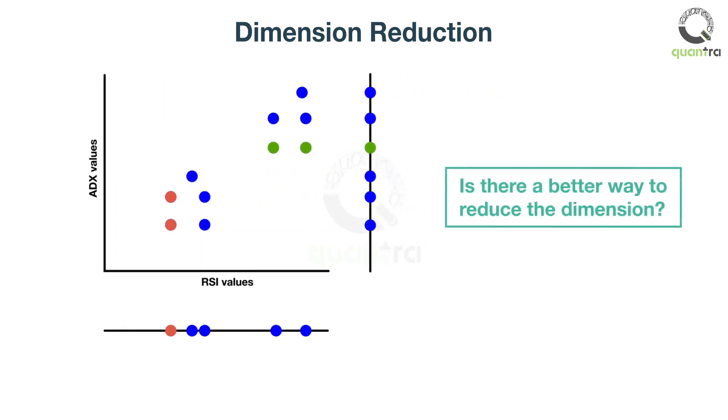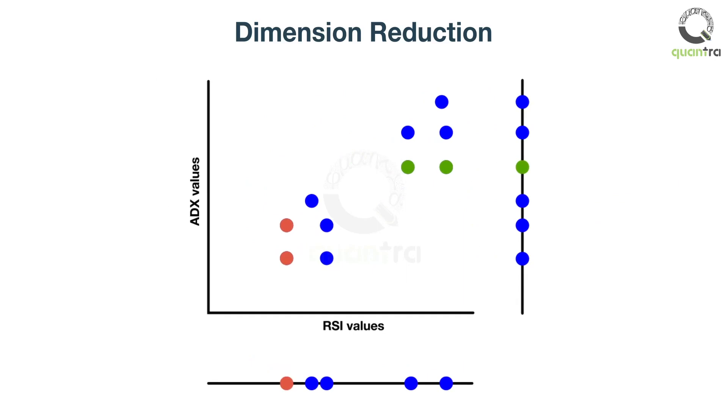Is there a better way to reduce the dimension while keeping the loss in information at a minimum? Yes. Draw a line that is in between the two axes and then bring all the points on this line.